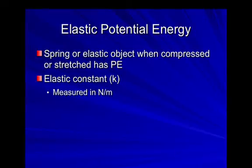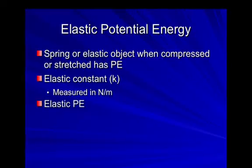The elastic constant really has to do with how strong the spring is — how hard it is to stretch — and that relates to how much energy you can store up inside it. Since the energy has nothing to do with mass but does depend on the elastic constant, and potential energy is energy due to position, the other part is how far you stretch it. This leads to the equation for elastic potential energy: one-half k x squared, where k is the elastic constant and x is how far you actually stretch it.